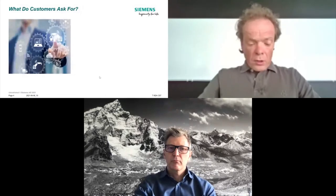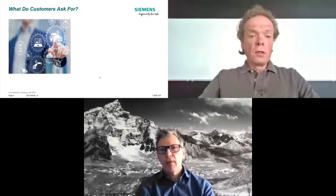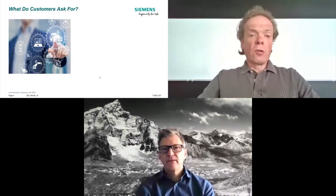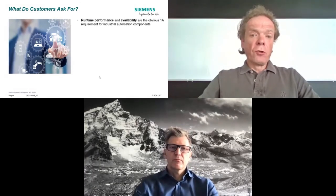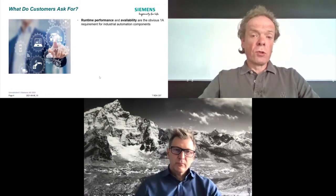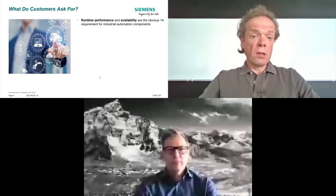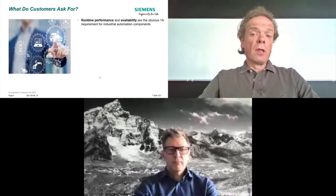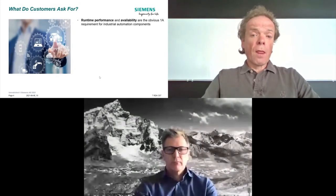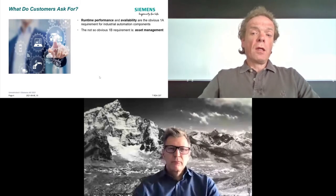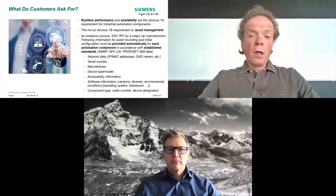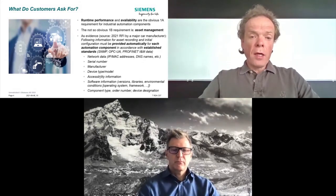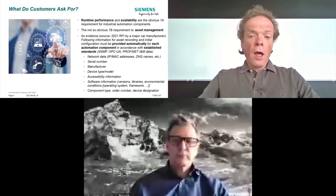The next question is what customers — owners and operators of industrial automation equipment — actually ask for. There is a number 1A requirement that is pretty obvious: they are interested in runtime performance — 99.9% availability of the component and predictable, available operations. And there is a not-so-obvious number 1B requirement: asset management. To give you an example, we have provided information from a recent RFI — Request for Information — by a major car manufacturer, one of the top five.